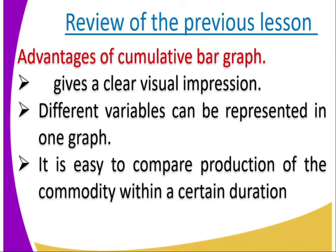Number two: the different variables can be represented in one group. For example, you can have tea and coffee represented in one group. Not necessarily one commodity — we can combine the variables.